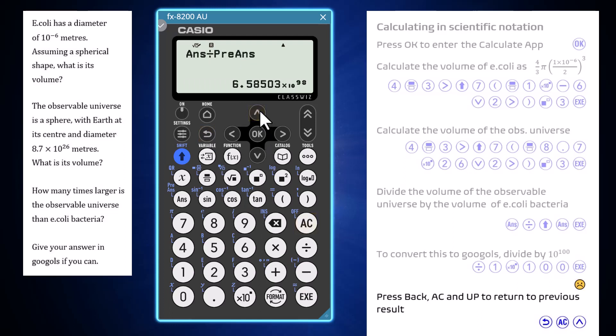Rather than using direct calculation, we can convert this result to googols with a little thought. This number, 6.6 by 10 to the power of 98, is 2 powers of 10, or 100 times smaller than 6.6 by 10 to the power of 100, which would be 6.6 googols.